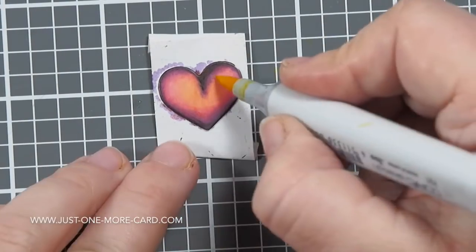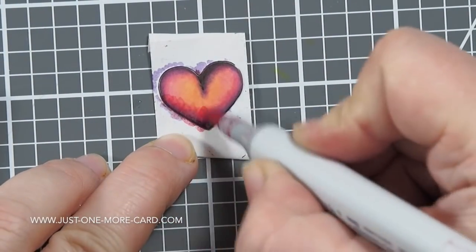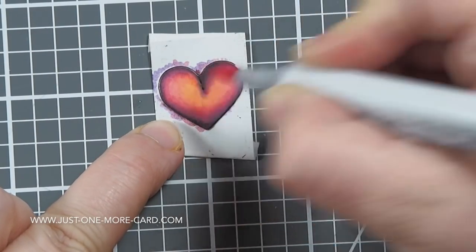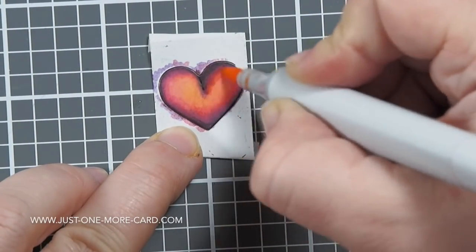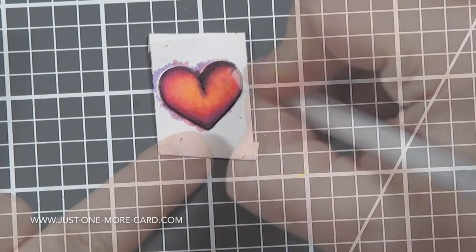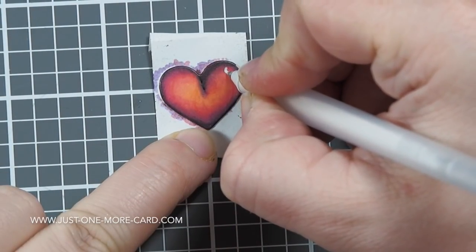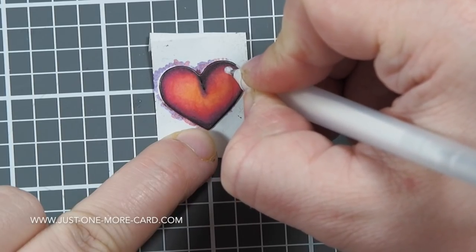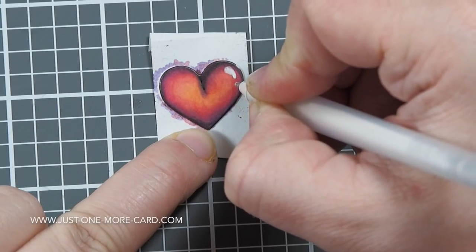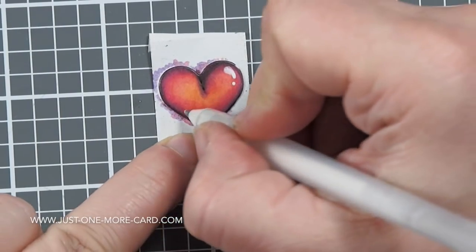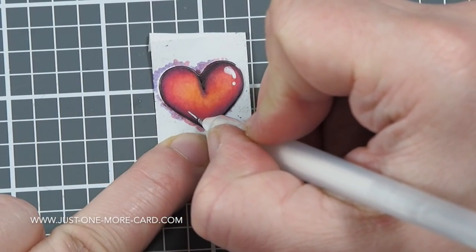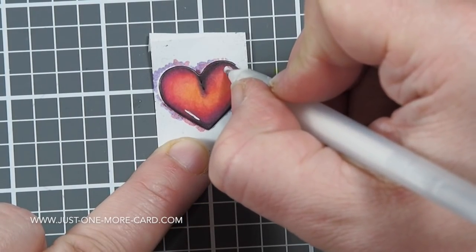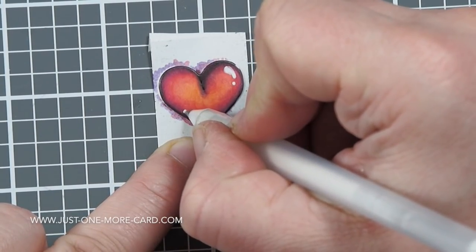You can see I keep going back in here. This by the way is Simon Says Stamp heavy ultra-heavy cardstock—again, all the supplies are listed in the video description below and on my blog. Until I have the shading for the heart that I like, then I'm using a white gel pen to add some faux highlights here, just to add even more dimension to the heart.